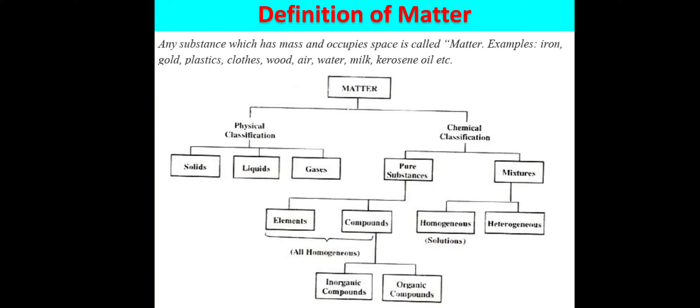Pure substances are further divided into two categories: first is elements and second is compounds. Both elements and compounds are homogeneous. Compounds can further be classified into inorganic compounds and organic compounds.